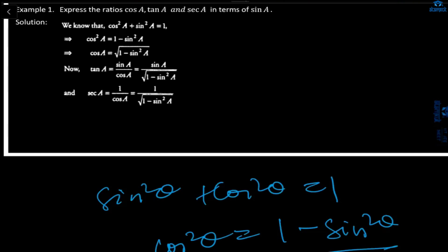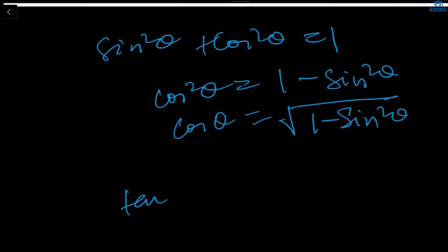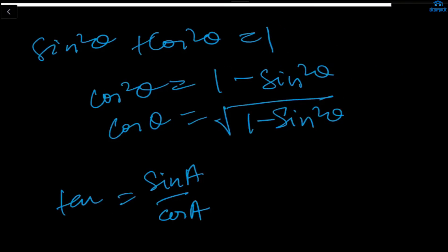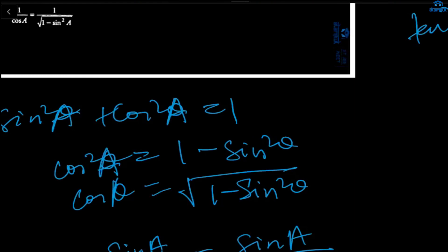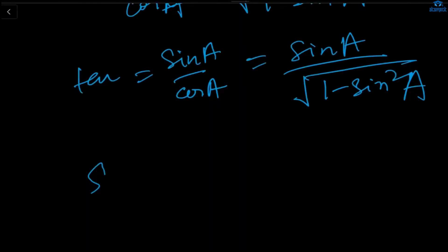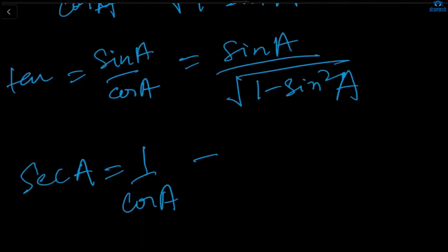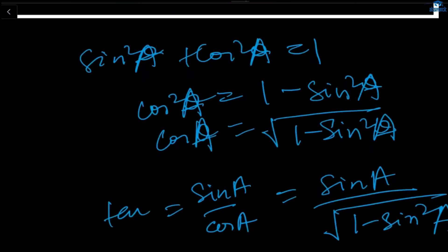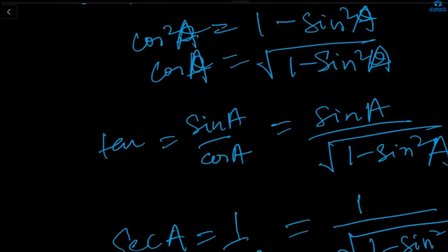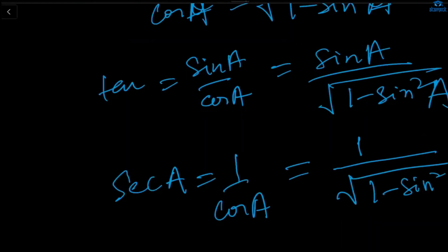To summarize: cosA = √(1 - sin²A) from the first identity; tanA = sinA/√(1 - sin²A); secA = 1/√(1 - sin²A). This is how you change any angle in terms of any other ratio — use the three main identities plus the basic relationships: tanθ = sinθ/cosθ, cotθ = cosθ/sinθ, and sec = 1/cos.